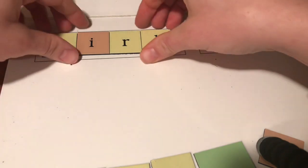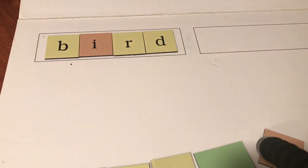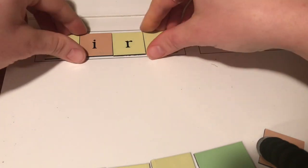Two more. Bird. A cardinal is a type of bird. Bird is spelled B-I-R-D. Bird. Last word.